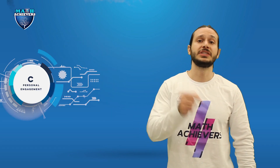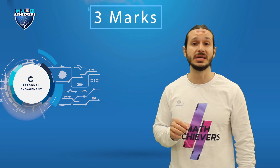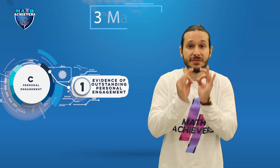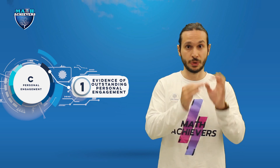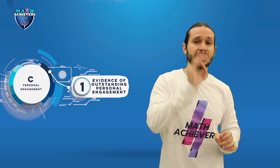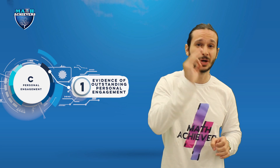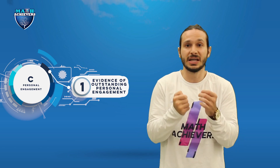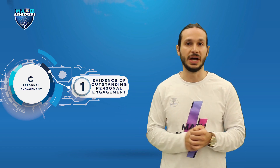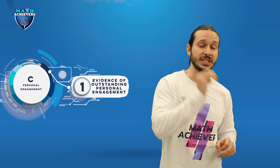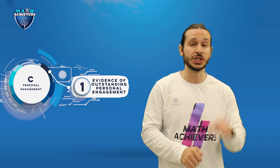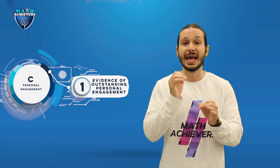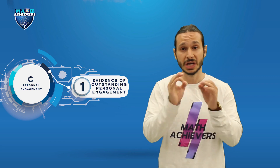Criterion C: personal engagement. The highest score possible for Criterion C is three marks. There must be evidence of outstanding personal engagement throughout your exploration. You always start your personal engagement from a problem you are facing in your real life. For example, maybe your dad is investing his money in the forex market and doesn't know how to calculate any expected value. You must state in your personal engagement that your dad is facing a problem, and you will solve it using the mathematics you learned inside the classroom.